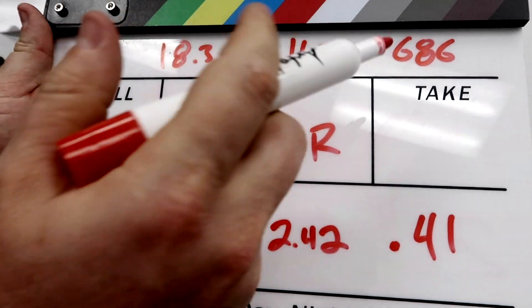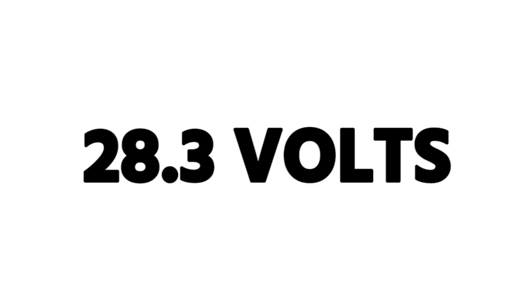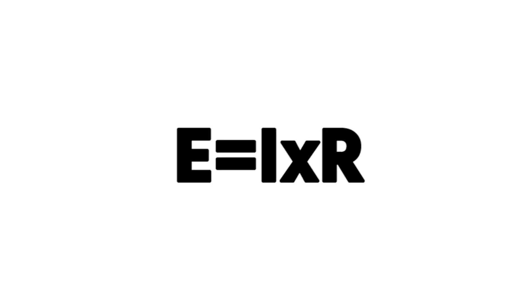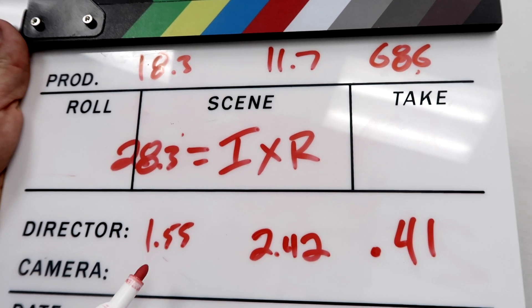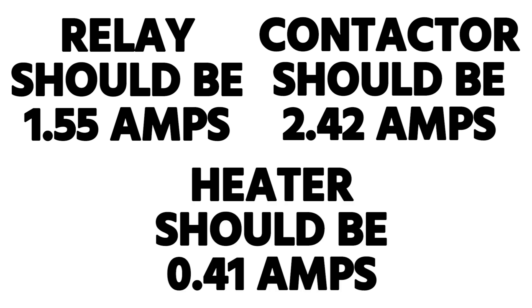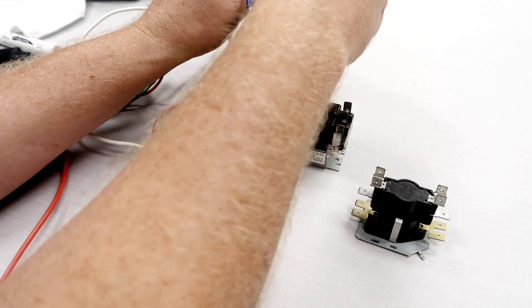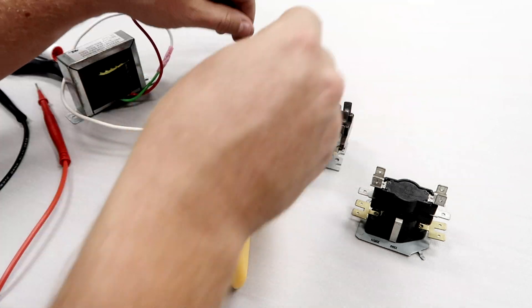Our resistances are 68.6, 11.7, and 18.3 ohms. We know our volts are 28.3. The formula is E equals I times R, or V equals A times R. Based on our calculations, our amps for the relay should be 1.55, for the contactor should be 2.42, and for the resistive load — the heater on our stack sequencer — should be 0.41. Let's see what we actually get, starting with the contactor at the predicted highest of 2.42.